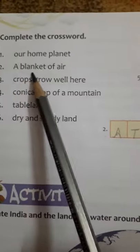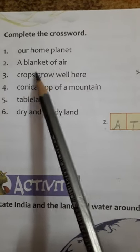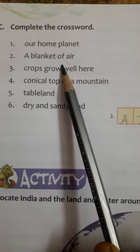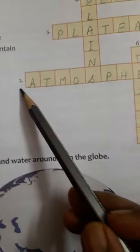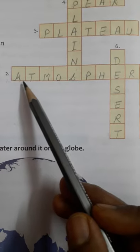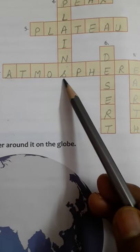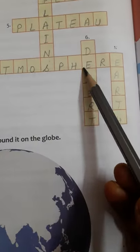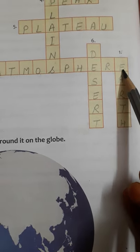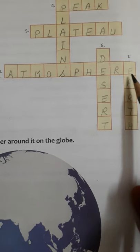Number 2, a blanket of air. What is blanket of air? What do we call blanket of air? Atmosphere. So you will write number 2, Atmosphere, here: A-T-M-O-S-P-H-E-R-E.